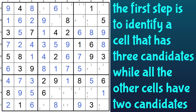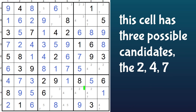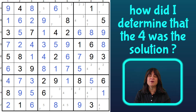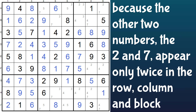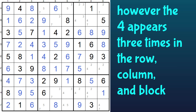First you need to look for one cell that is not bivalue, but rather is tri-value — has three values — while all the rest have just two values. Now, how did I decide that the four was the solution? Because the other two numbers, the two and seven, only appear twice in each row, column, or block, whereas the four appears three times in each row, column, or block.